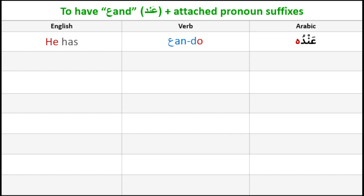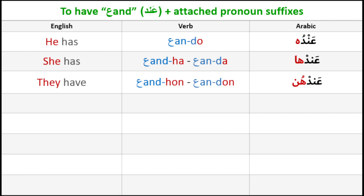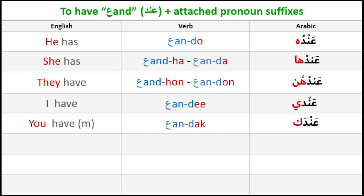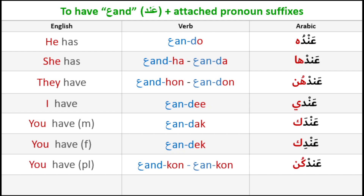عند plus attached pronoun suffixes: He has – عنده. She has – عندها. They have – عندهن. I have – عندي. You have (to a man) – عندك. You have (to a woman) – عندك. You have (plural) – عندكن. We have – عندنا or عنا.